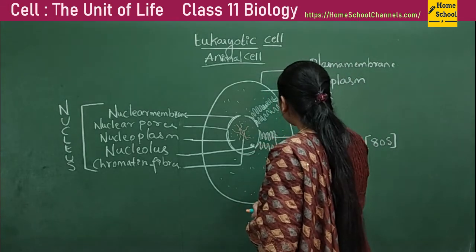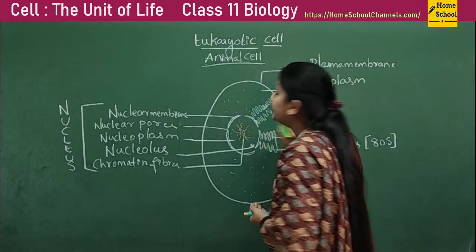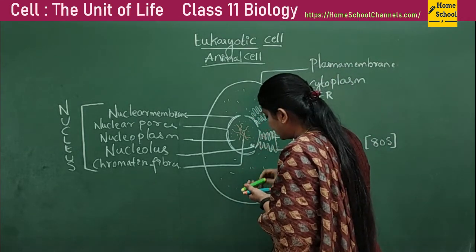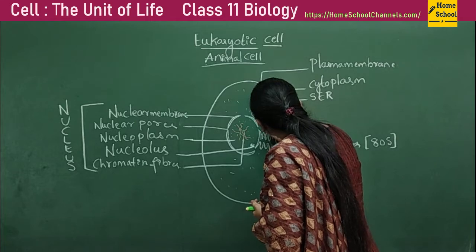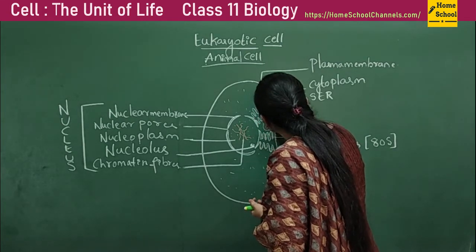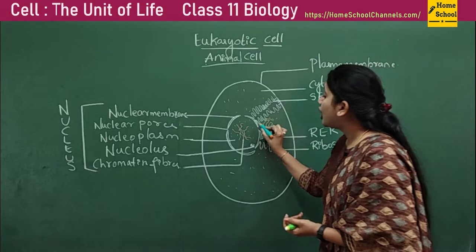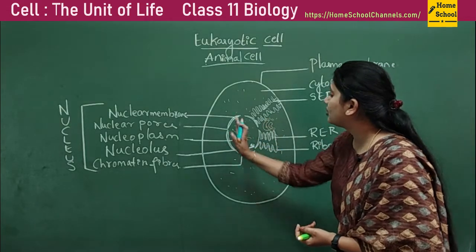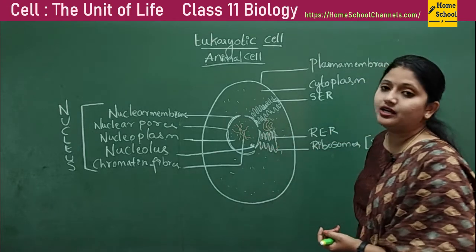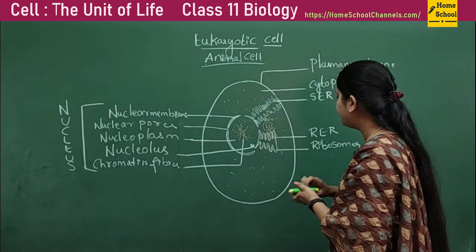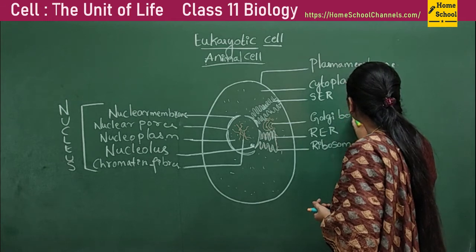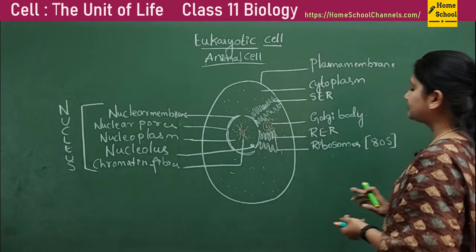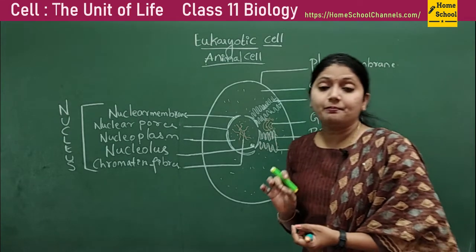The next organelle is located near the nucleus. Very close to the nucleus there is one organelle called the Golgi complex. The convex side of the Golgi complex always faces toward the nucleus, and the concave side always faces toward the plasma membrane. This is the Golgi body or Golgi complex, which is the second membrane-bound organelle.